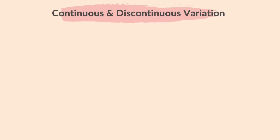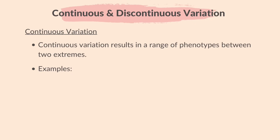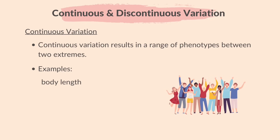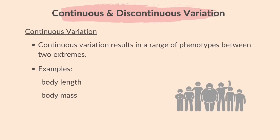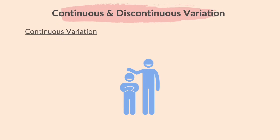Variation can be continuous or discontinuous. Continuous variation results in a range of phenotypes between two extremes. Examples include body length and body mass. Continuous variation is caused by both genes and the environment. For example, if two siblings have the same genetic predisposition for height, but one sibling has access to better nutrition and receives proper health care, they may grow taller compared to their sibling who lacks these advantages.